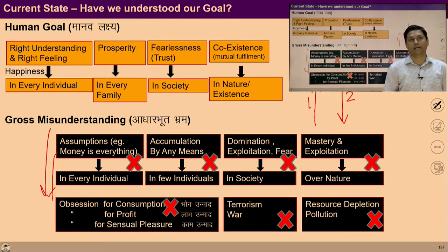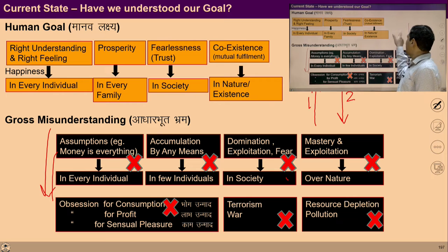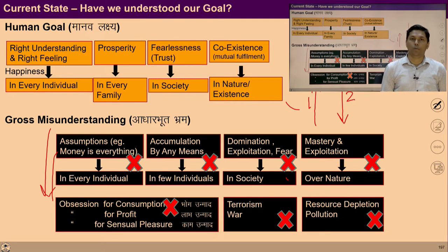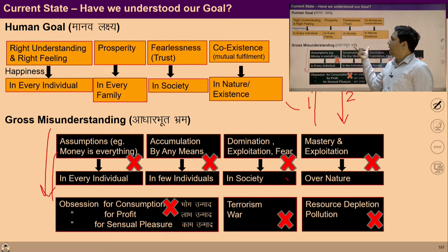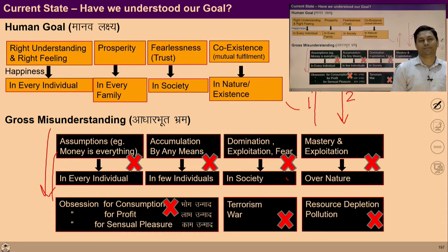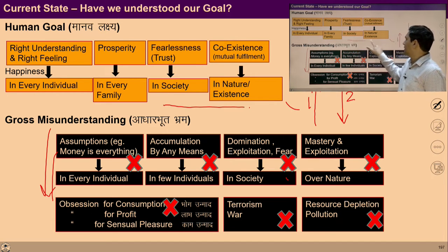Also observe the efforts being made in society and ask yourself: what is the end result of those efforts — are we going toward state two or state one? If our efforts are directed toward state one, then for our generation and future generations there would be scope for a fulfilling life. If moving toward state two, there would not be any provision for a fulfilling life even for a single person. Verify this on your own using your natural acceptance.